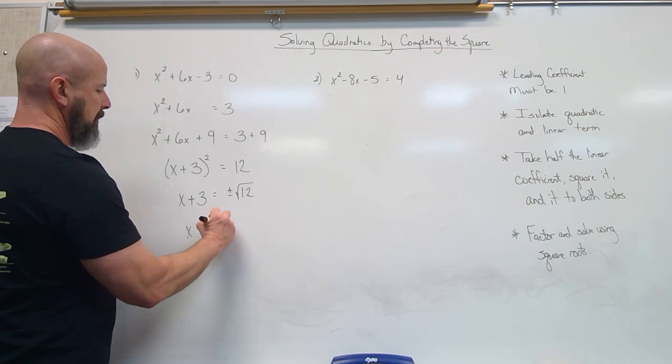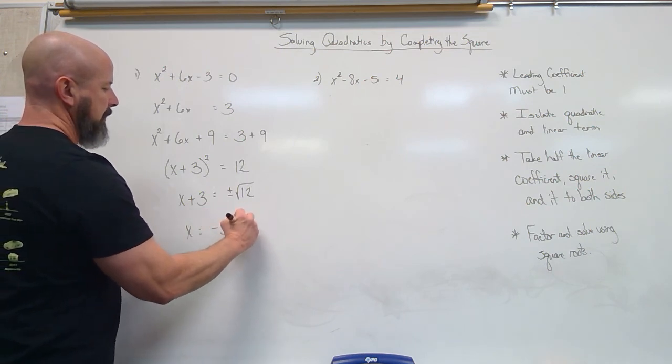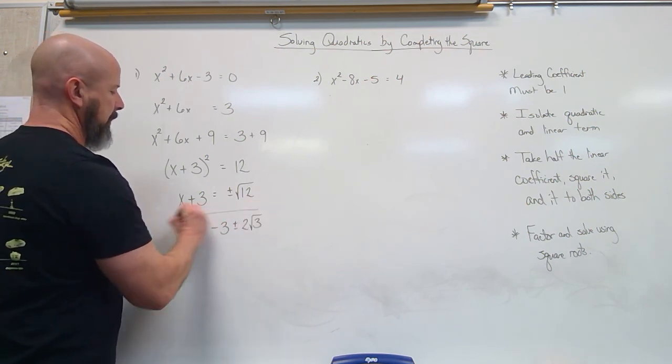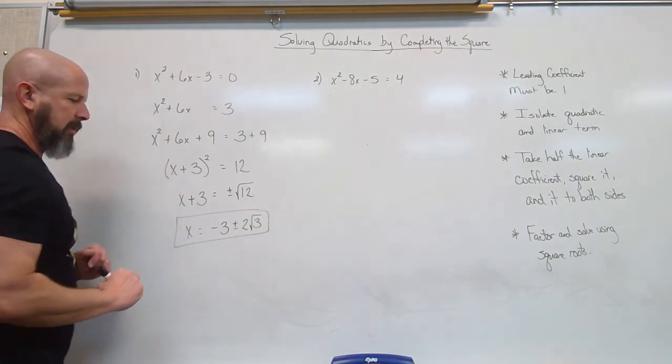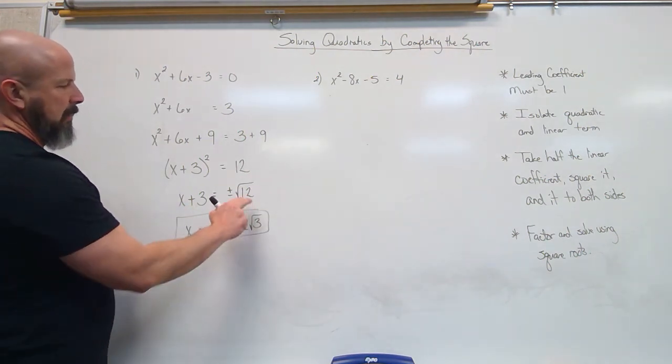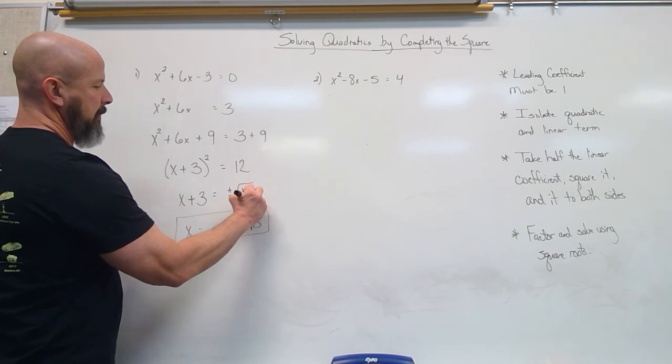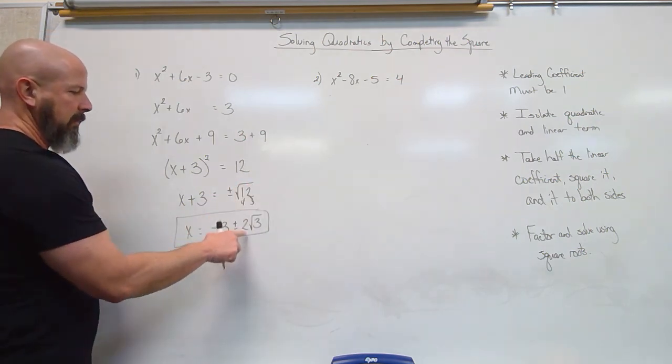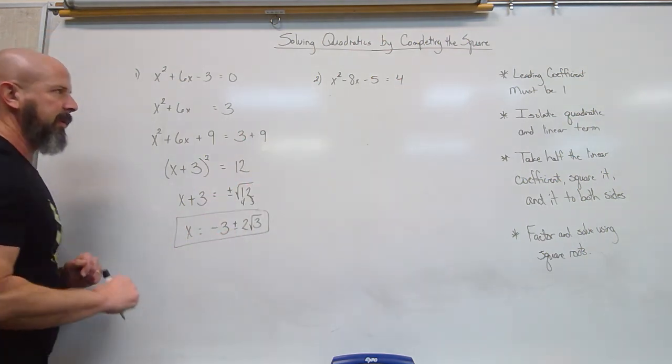Move that 3 over. Negative 3 plus or minus 2 root 3. All right, so there's my 3. Move it over. 12 is 4 times 3. If we simplify that root, square root of 4, there's my 2 coming out and the 3 staying in.